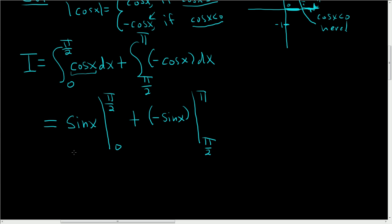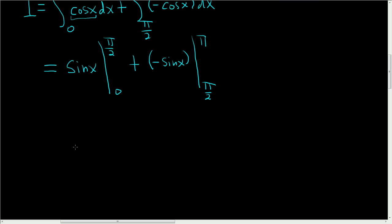All right. Let's be careful here. This is the part where I usually mess up. So let's see. So first we plug in the pi over 2. So we end up with sine of pi over 2 minus the sine of 0 plus, I'm going to put the second piece in parentheses, negative sine pi.